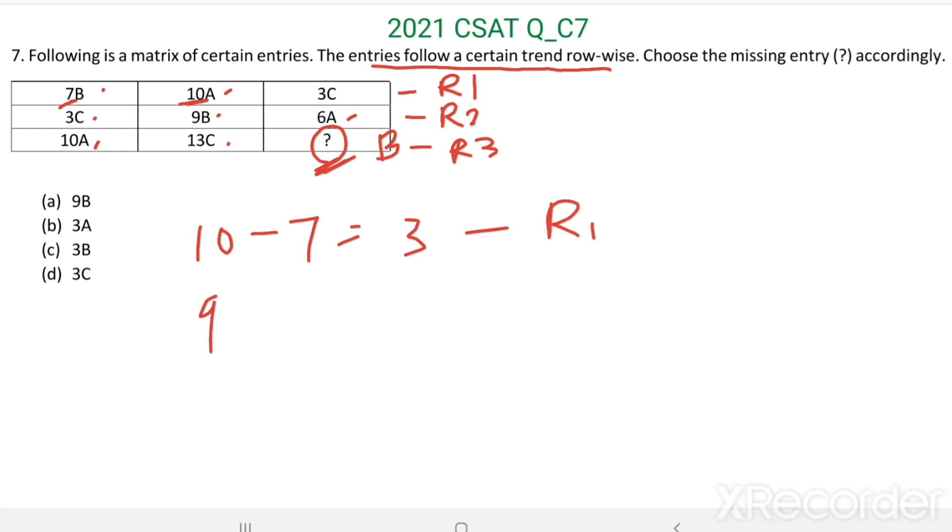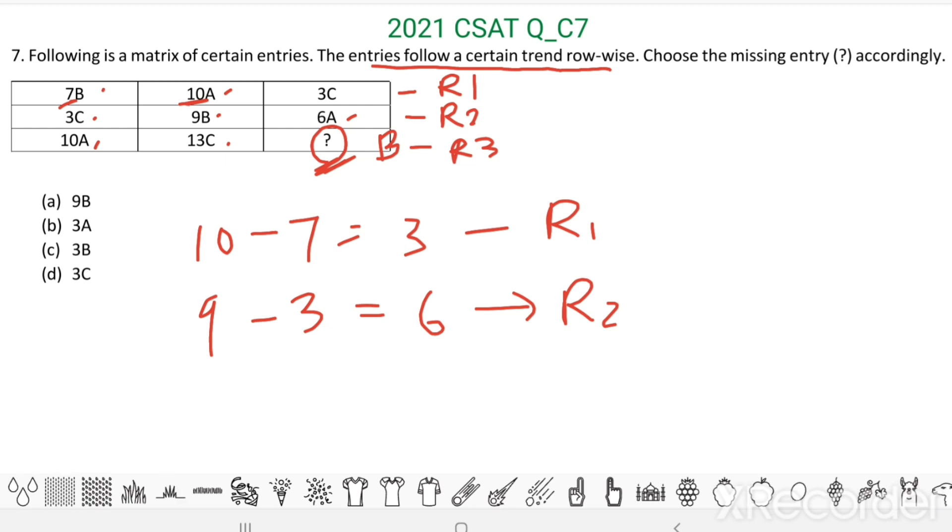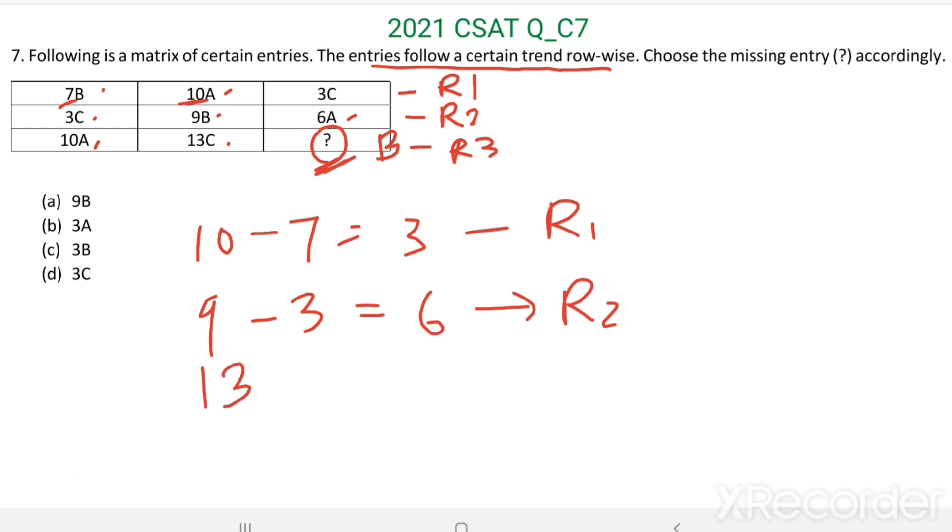Then nine minus three equal to six. This is from row two. If this is the pattern, this is the trend. Then thirteen minus ten equal to three. This is from row three.